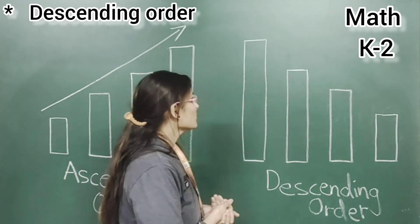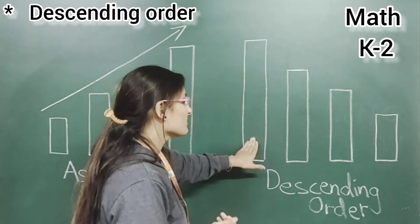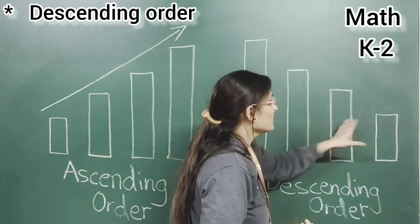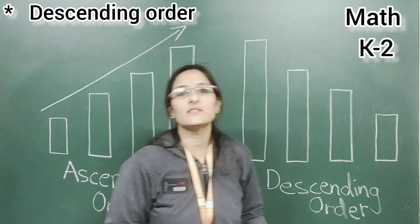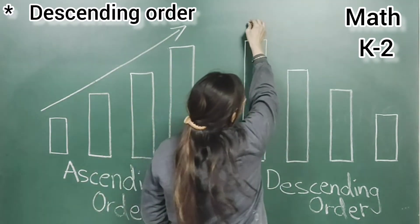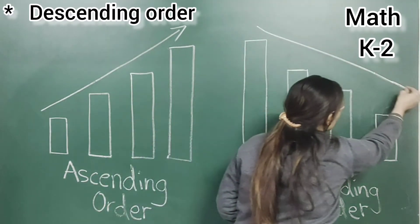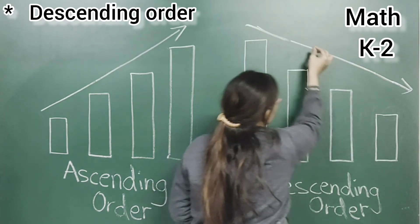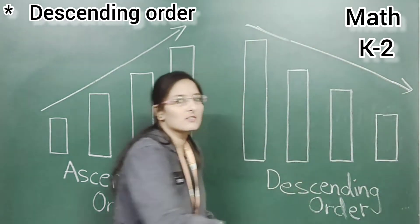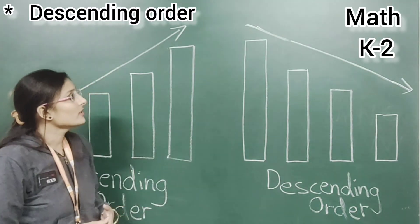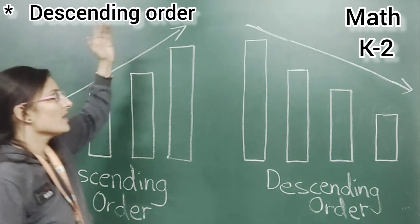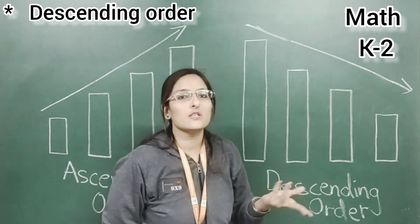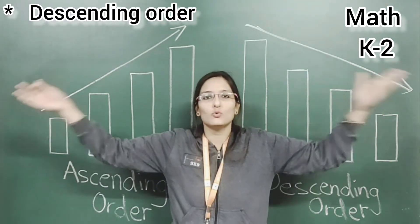See here — the biggest rectangle first, then smaller, then smaller, and the last one is the smallest. So the graph will go like this — from biggest to smallest, going down. The graph goes up in ascending order and down in descending order. So how we have to arrange numbers? From biggest to smallest. I hope you got this.